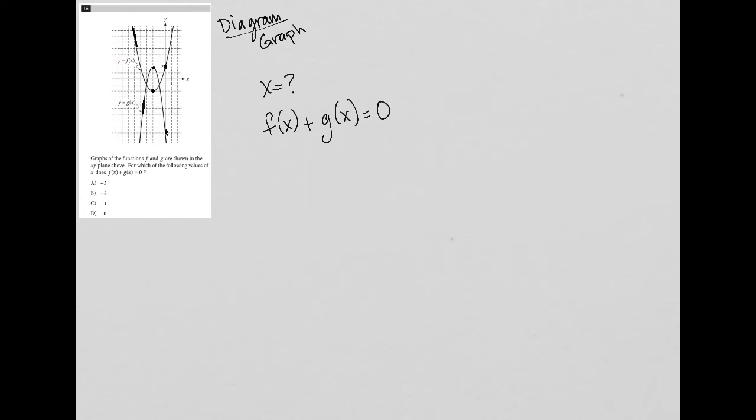Well, however do you get the sum of two values to equal 0? It would mean that f of x must be equal to the negative of g of x,